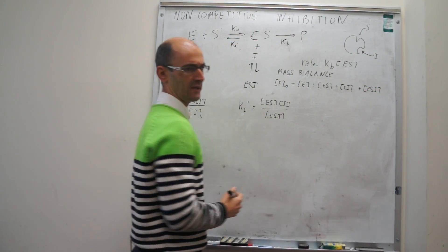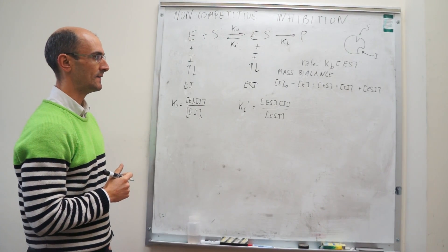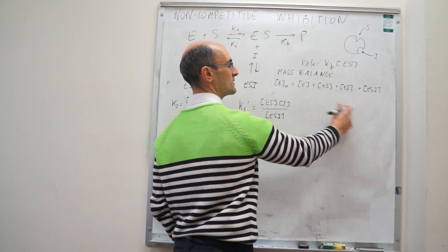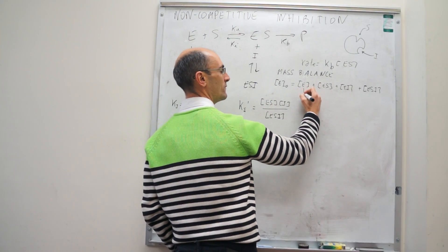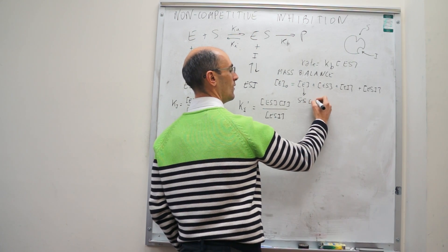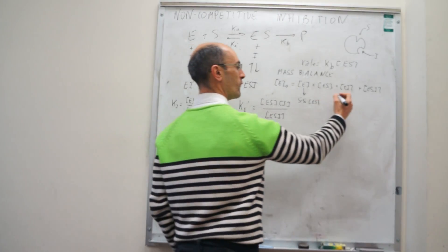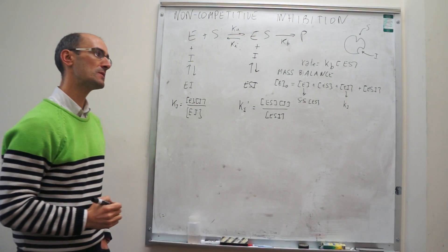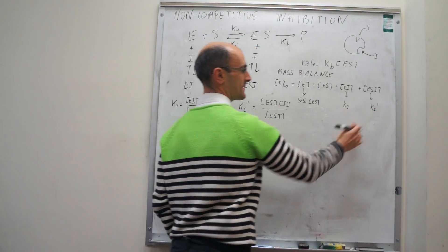Non-competitive inhibition is the most complicated of the three cases we're going to study. To solve this expression for ES, we have to put everything as a function of ES. We're going to use the steady-state approximation for ES, exactly as we did for competitive inhibition, using Ki and Ki prime. That's the new thing.